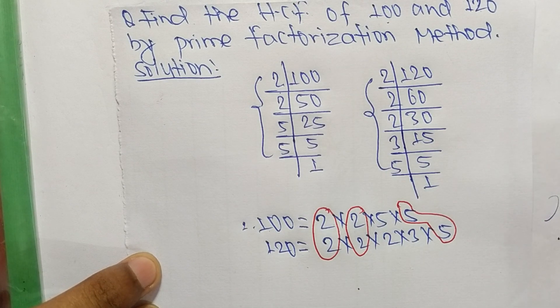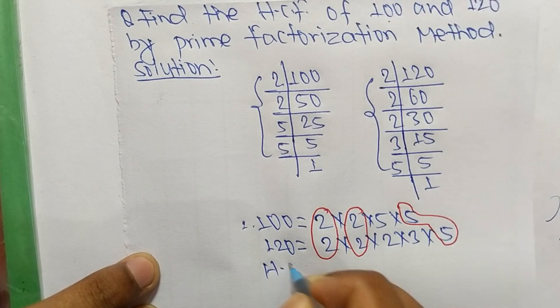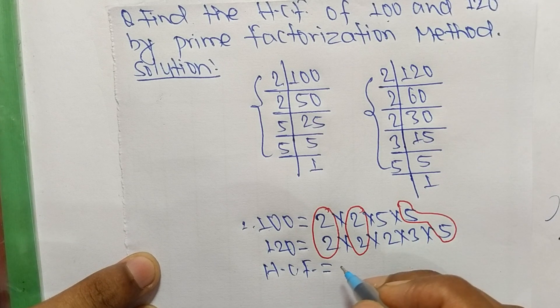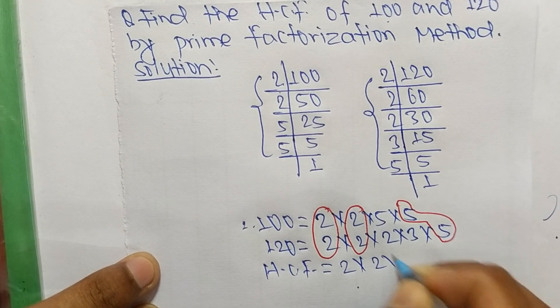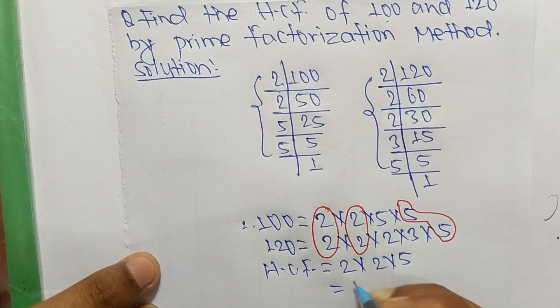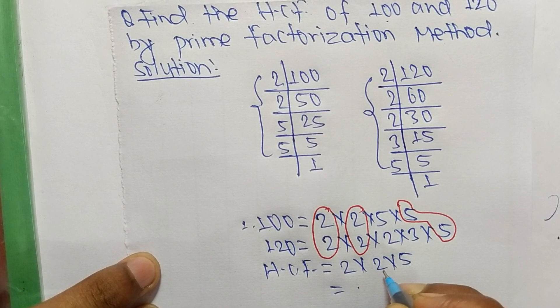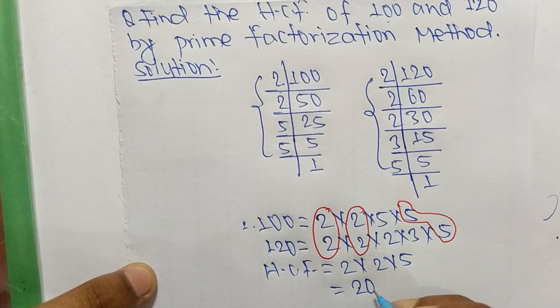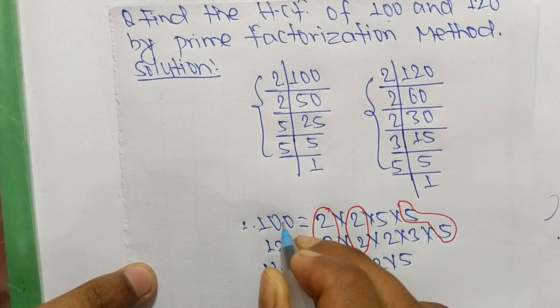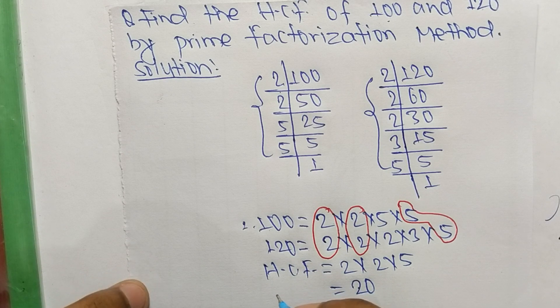So the HCF is equal to the product of common factors which are 2, 2, and 5. So 2 times 2 equals 4, and 4 times 5 equals 20. So 20 is the HCF of 100 and 120.